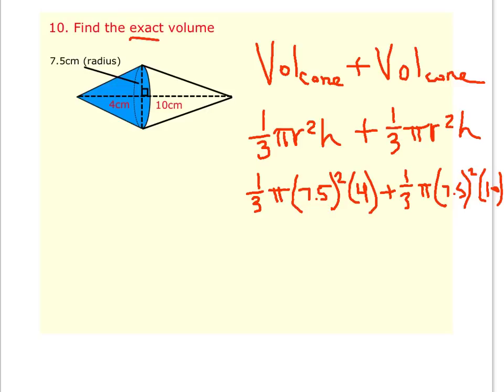Now, it does say give the exact volume, so you're going to start with this right here and calculate 7.5² times 4, divide that by 3, you should get 75. So that's 75π. When you do this evaluation, 7.5² times 10 divided by 3,